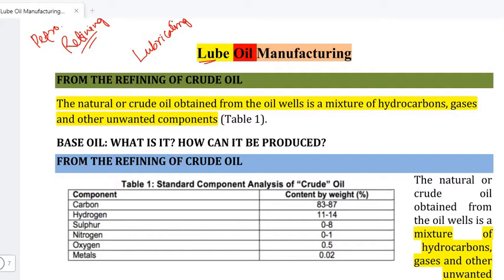The lubricating oil is used to reduce friction and wear, remove heat generated by friction, and prevent corrosion.